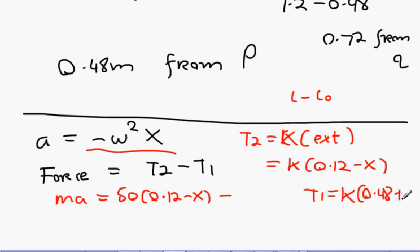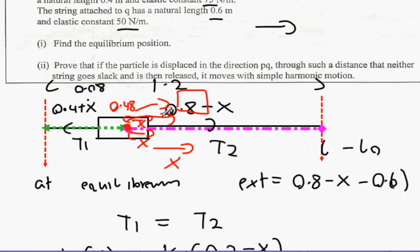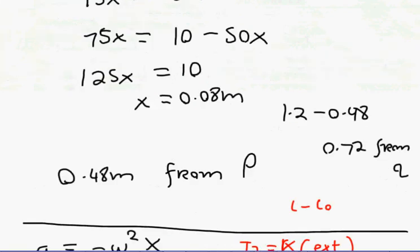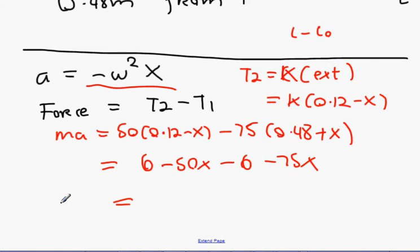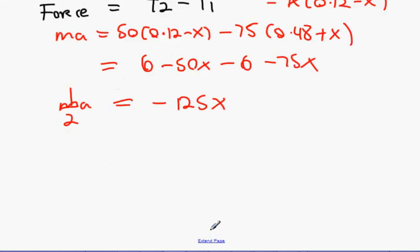Minus T1. T1 is its extension constant multiplied by its current extension. Before its extension at equilibrium was 0.48 plus x because it's being extended further out. So it was 0.48 but now it's getting pulled further out increasing the length of string for T1 and decreasing the extension for the string representing T2. So that's going to be 75 times 0.48 plus x. Multiply them out and we're going to get 6 minus 50x minus 6 minus 75x.